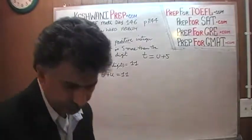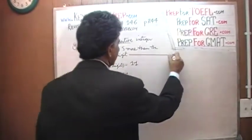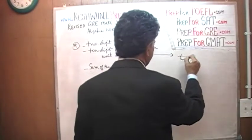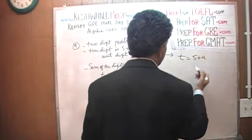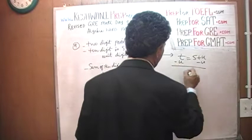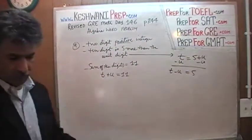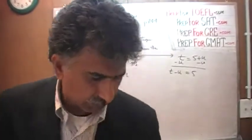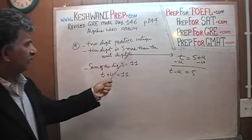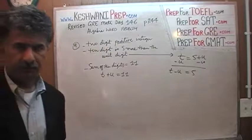Let's continue. The tens digit is 5 more than the units digit. If we subtract U from both sides, we end up with T minus U equals 5. In other words, when they tell us the tens digit is 5 more than the units digit, that is the same as saying the difference between the tens digit and the units digit is 5.